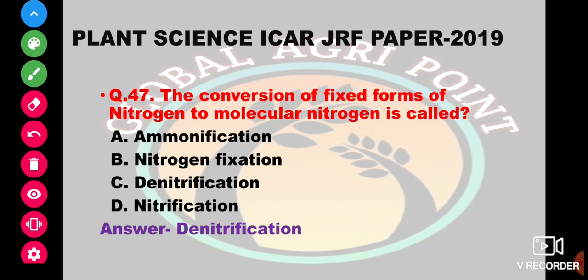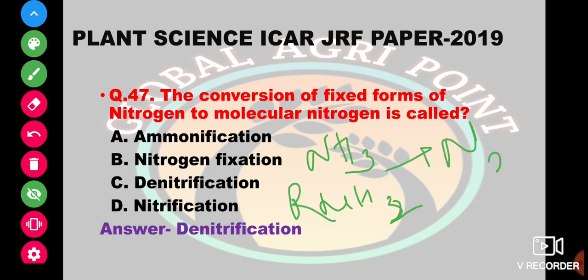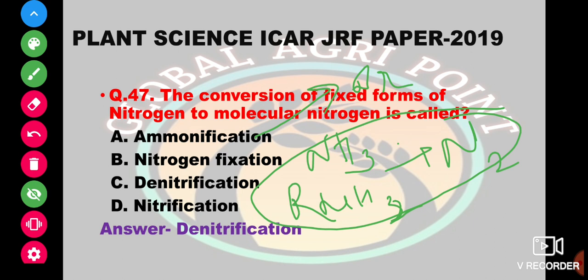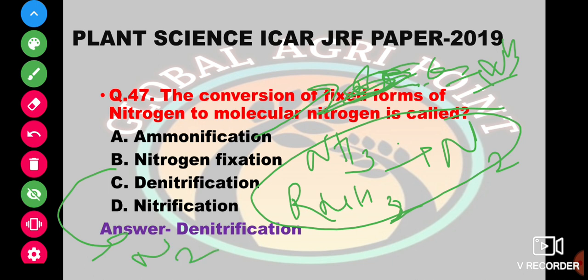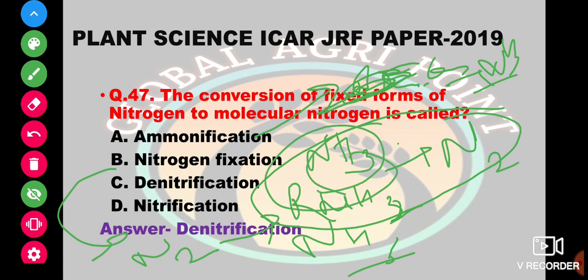The conversion of fixed forms of nitrogen to molecular nitrogen is called denitrification. Ammonification is the process of converting dead proteins into ammonia. Nitrogen fixation is the fixing of atmospheric nitrogen into different forms. Nitrification is the conversion of ammonia to nitrite and nitrate. So the answer is denitrification.